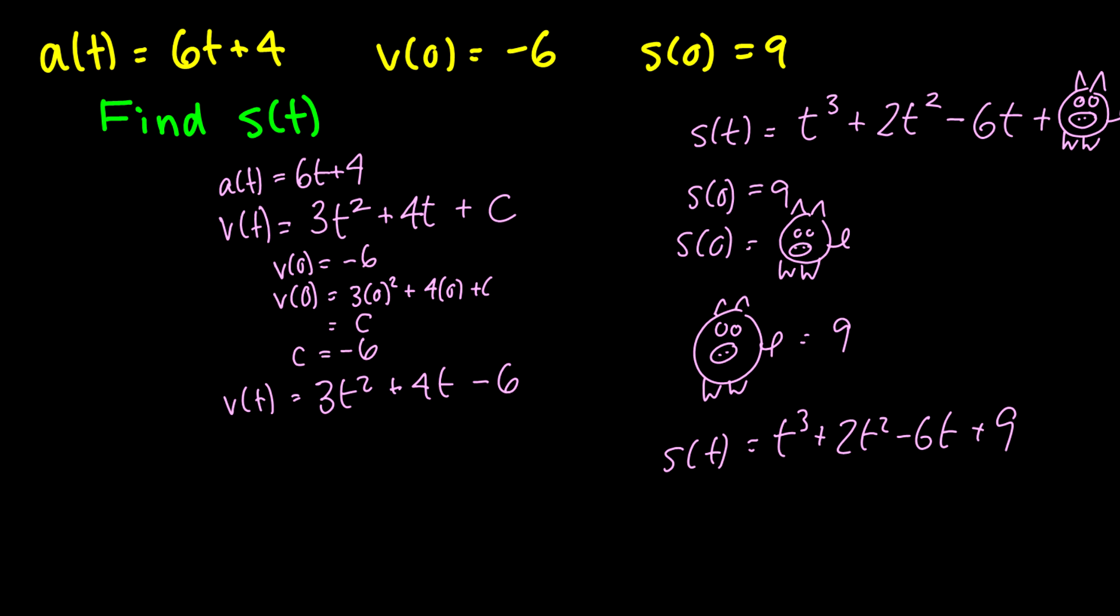In the end we have our position function is going to be t^3 + 2t^2 - 6t + 9. And this is our function and they might ask us to do things with this function like what is the position at time 8. And you could plug in 8 and you can see what you can get.